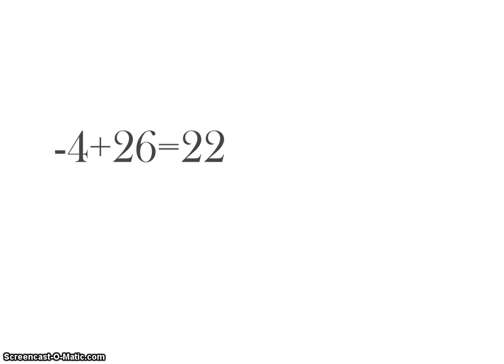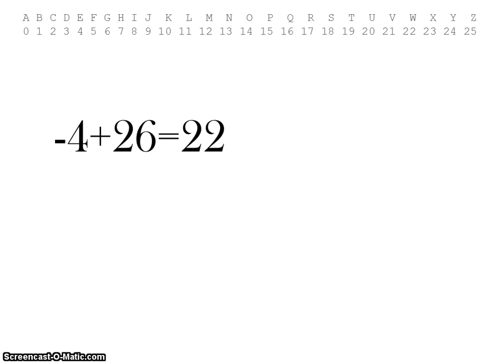So, since negative 4 is less than 0, we add 26 to it to get 22. And what letter corresponds to 22? W. So that's the decoded letter, and we write this under the other two.